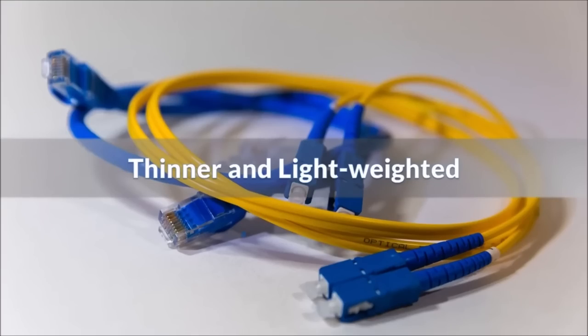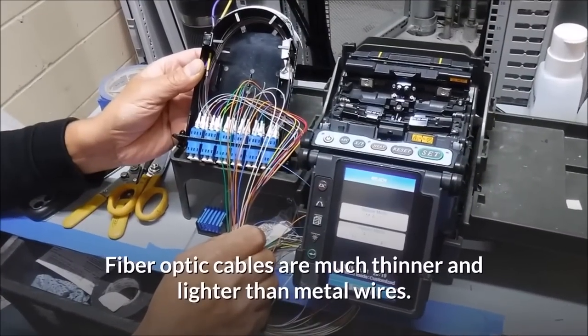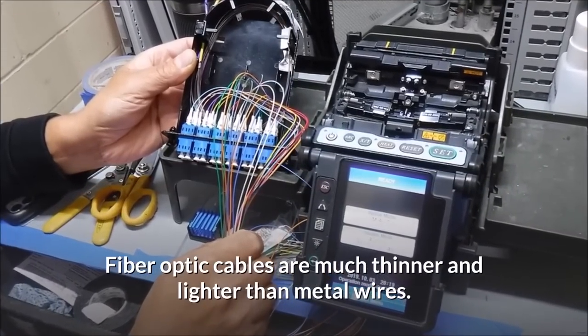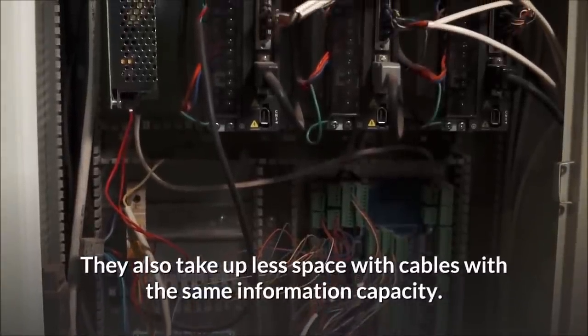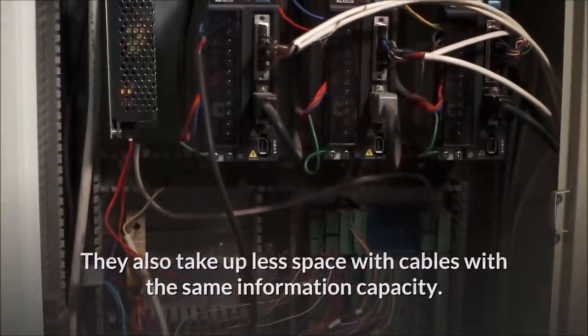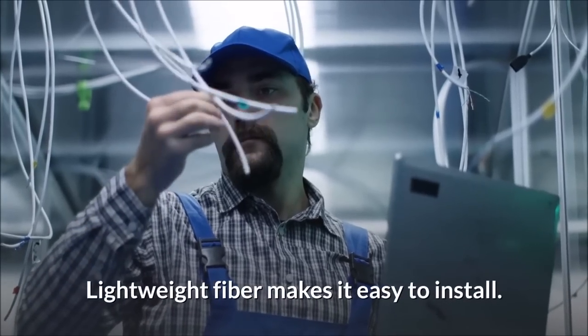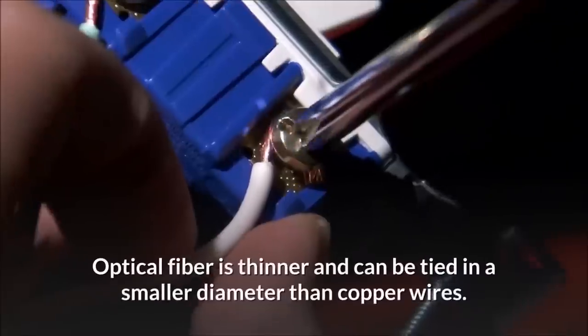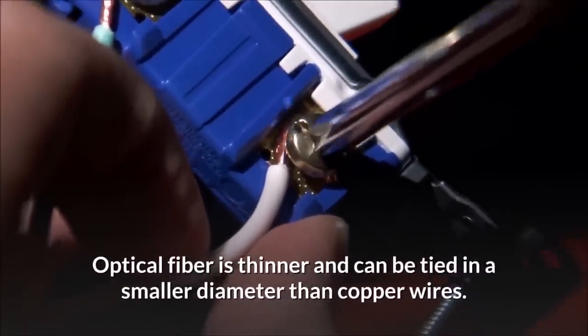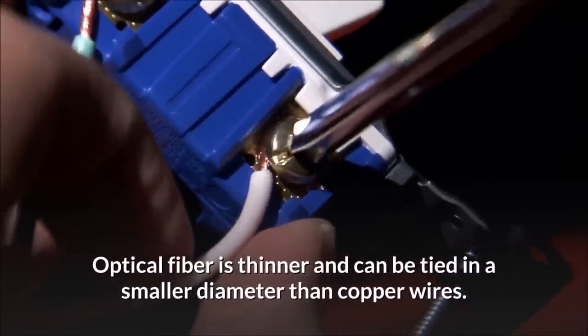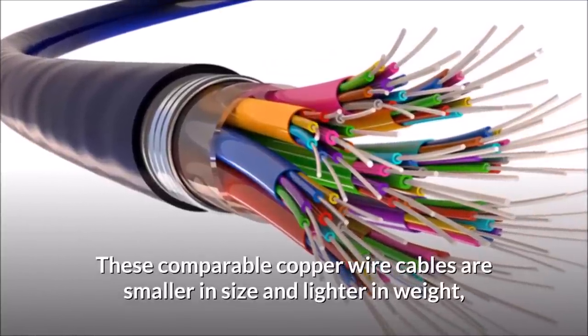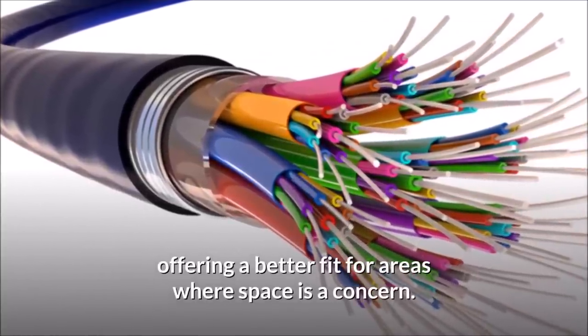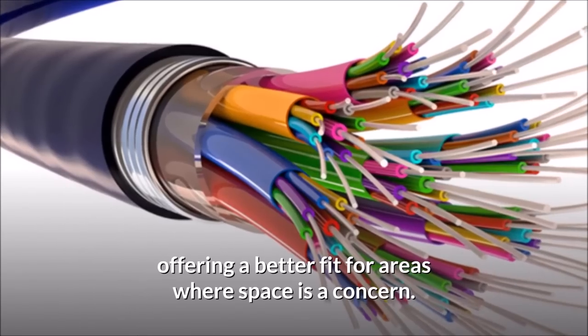Thinner and light-weighted. Fiber optic cables are much thinner and lighter than metal wires. They also take up less space with cables with the same information capacity. Lightweight fiber makes it easy to install. Optical fiber is thinner and can be tied in a smaller diameter than copper wires. These comparable copper wire cables are smaller in size and lighter in weight, offering a better fit for areas where space is a concern.